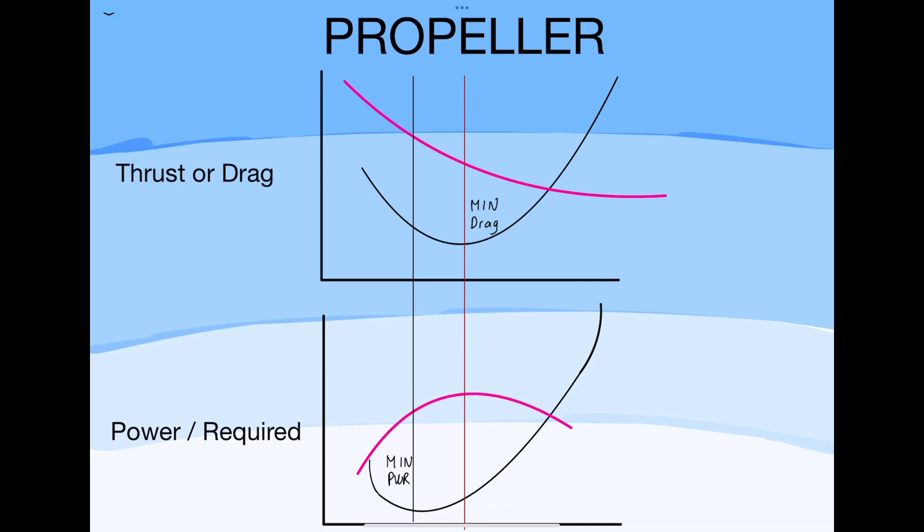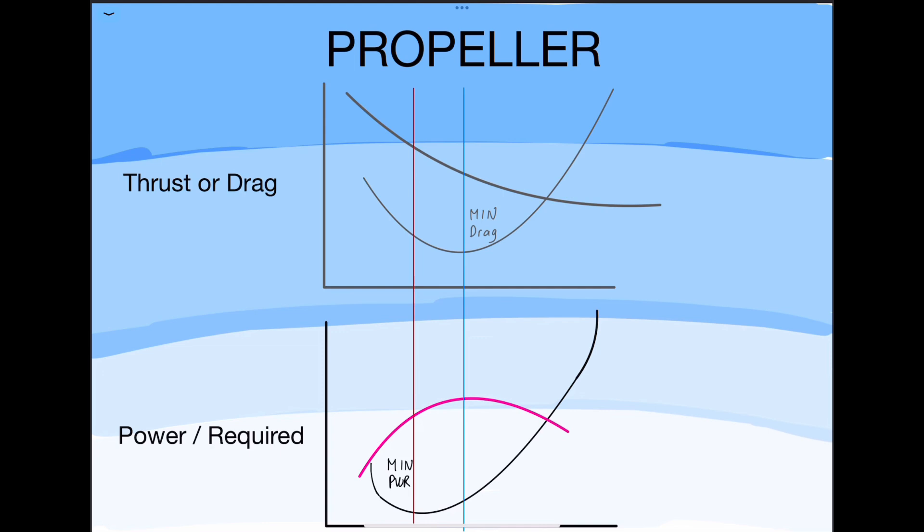Same as before but this time we're going to be talking about propellers. The only thing really different about these two graphs are the magenta lines. If you look at the top, the thrust available and the bottom which is power available, they curve differently compared to the jet. Just by that you know that the speeds are going to be different. I mean the graphs are different so obviously the locations of the speed for the props are going to be different compared to the jets. Just like before, I highlighted the power curve on the bottom and grayed out the drag curve on top.